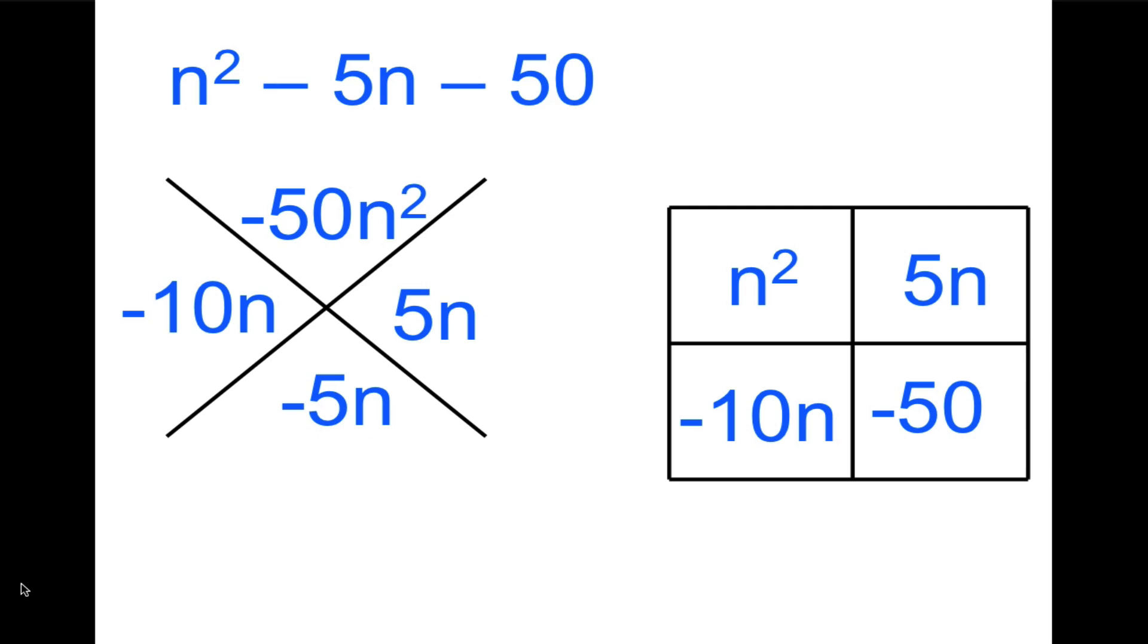So the last step: what times what equals n²? That would be n times n. n times what equals 5n? That would be n times 5. The answer is n plus 5.